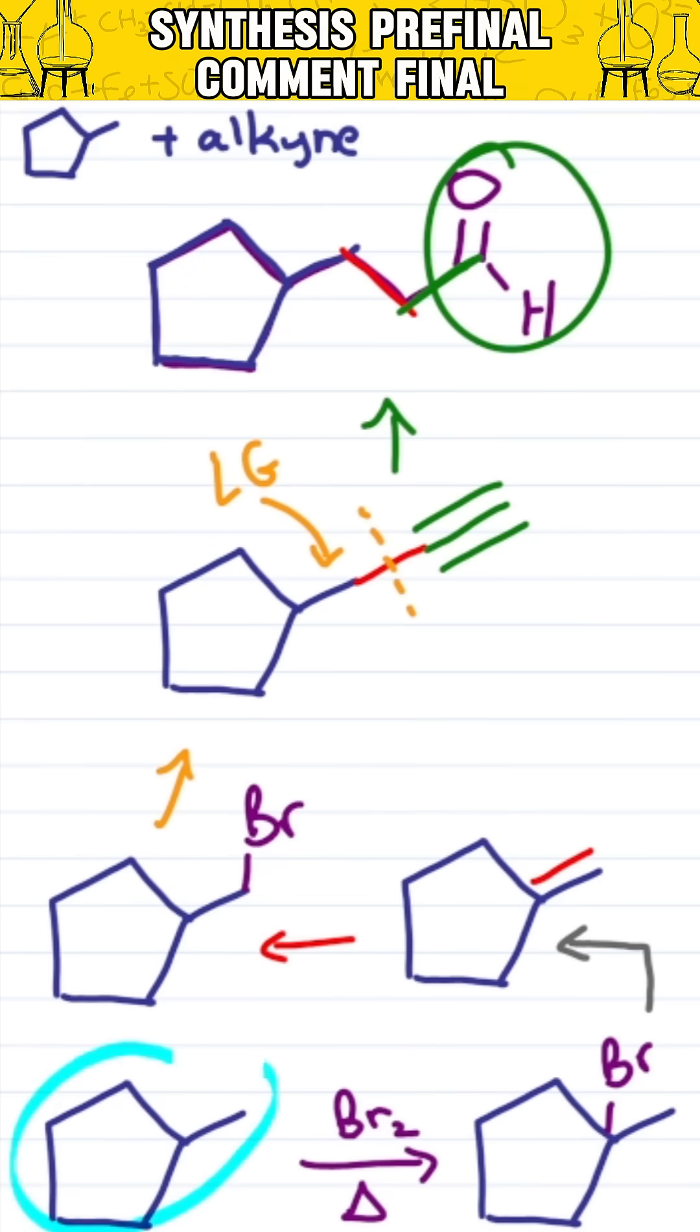We have our alkyl halide, we react it with Br2 in heat or light for radical halogenation, and get our bromine at the most substituted carbon. React that with potassium tert-butoxide in tert-butanol on heat for the Hoffman elimination. React that with HBr and peroxides for the anti-Markovnikov halogenation.